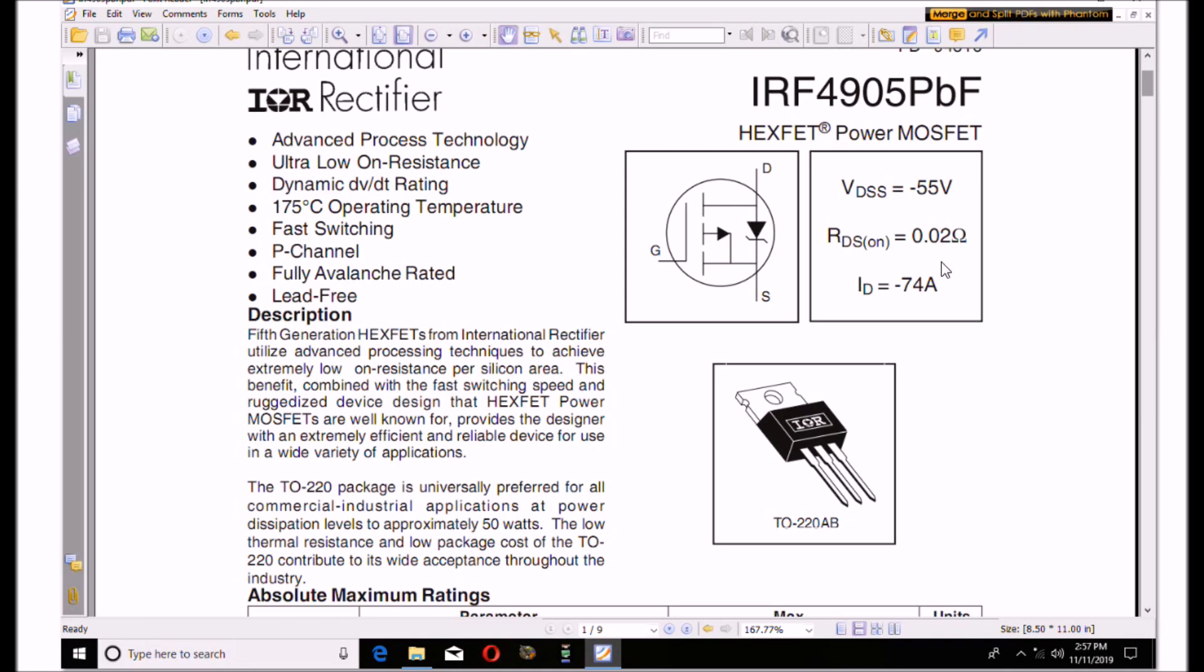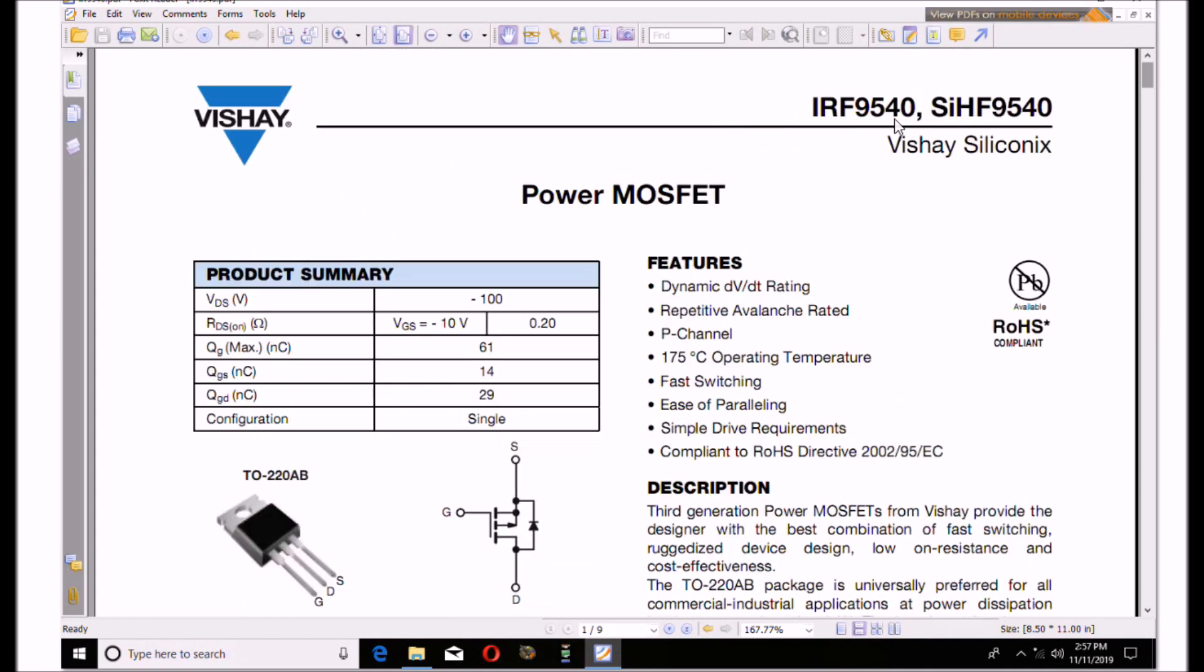This is the IRF9540. This is the ones that I used in the test that completely failed their specs. It's supposed to have an RDS of 0.2. It actually had more like 1 ohm or 0.7 or some crazy thing. But these were the ones I used. The ones that I bought were bad, I'm going to trash them. They're off spec. This also is a p-channel, you note by the arrow.